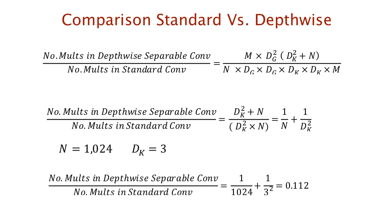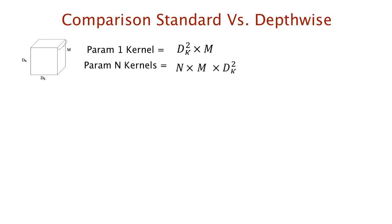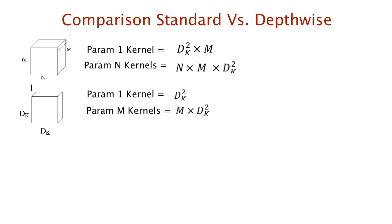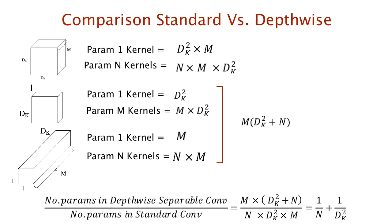We can also compare the number of parameters. In standard convolution, each kernel has dk² × m learnable parameters, and with n kernels that's n × m × dk² total. In depthwise separable convolution, the depthwise phase uses m kernels of shape dk × dk, and the pointwise phase uses n kernels of shape 1 × 1 × m, giving m × dk² + m × n total. Factoring out m, the ratio of parameters matches the ratio of computational cost.